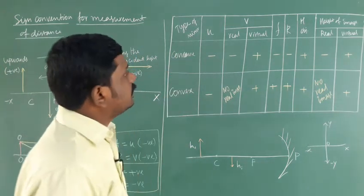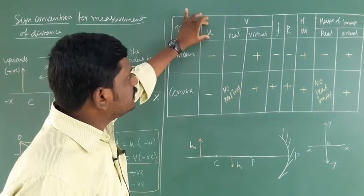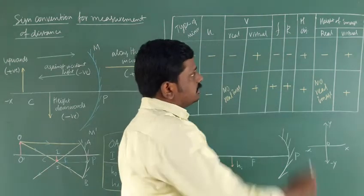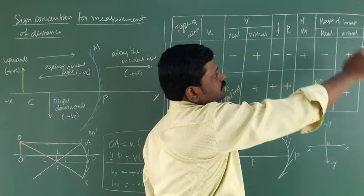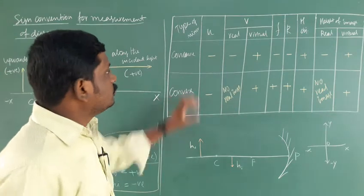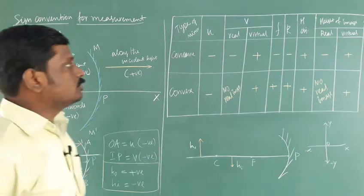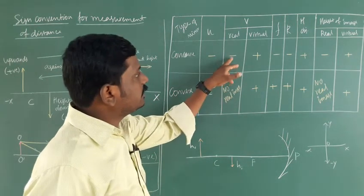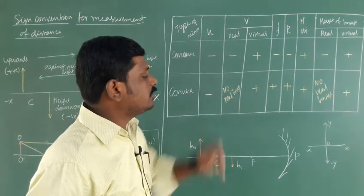For a concave mirror: u is object distance, v is image distance, f is focal length, and r is radius of curvature. h is height of object, then height of image. The image can be real or virtual. In case of concave mirror, u is always negative because the object is placed on the left-hand side. For most cases we get a real and inverted image; in the last case we get a virtual image.